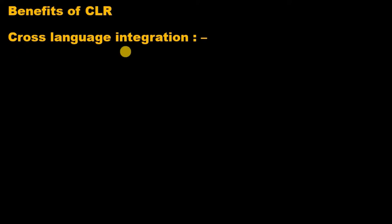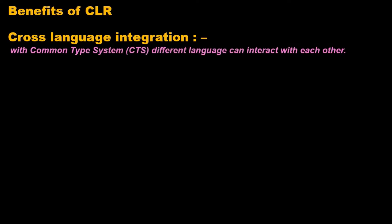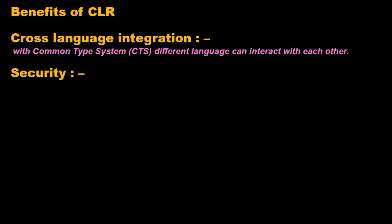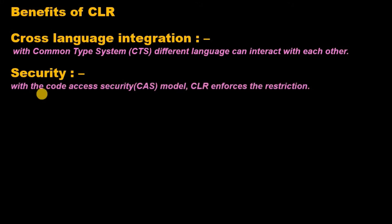Cross-language integration: the Common Type System (CTS) provides a common standard so different languages can share each other's libraries, minimizing extra coding efforts and saving time. Security: with the code access security model, CLR enforces restrictions on code by giving access to perform only those tasks for which it has permission.